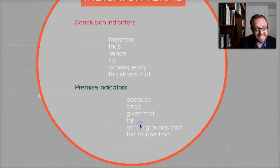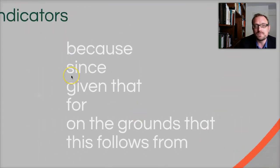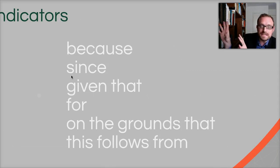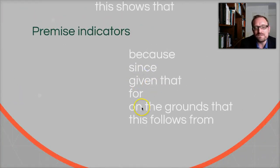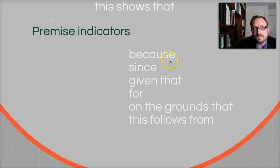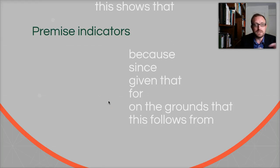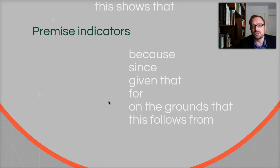Conversely, we also have premise indicator terms — for instance, "because." Someone says: "The dog must have known who the visitor was because the horse had been taken out of the stall and the dog hadn't barked." Notice I can drop in "because" right where the premises go. Other premise indicator terms include: since, given that, for, "on the grounds that," "this follows from." When you see these words just before a statement, that typically means there's a premise.